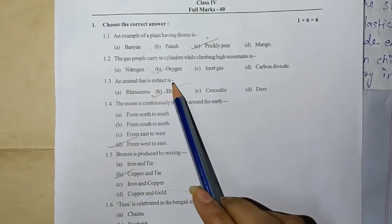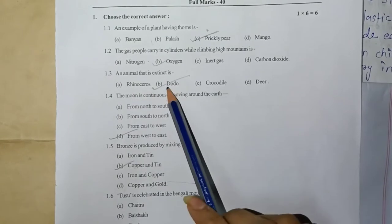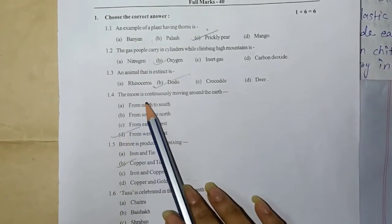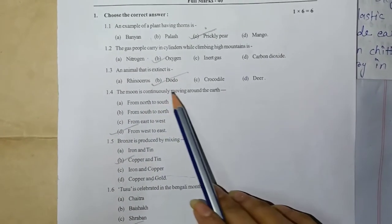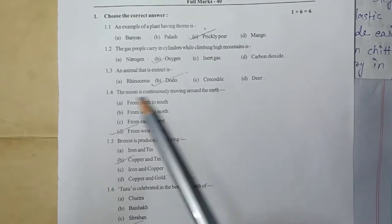1.3: Animal that is extinct is - answer: dodo. 1.4: The moon is continuously moving around the earth.